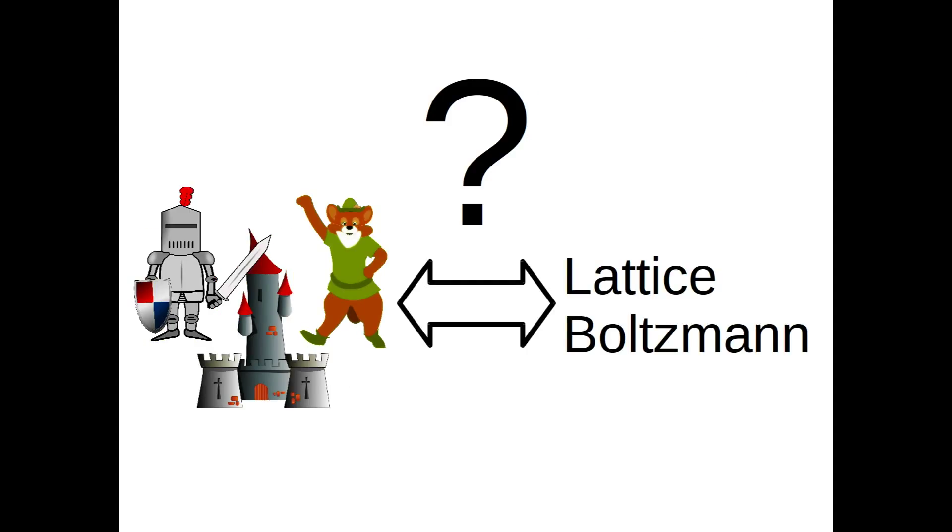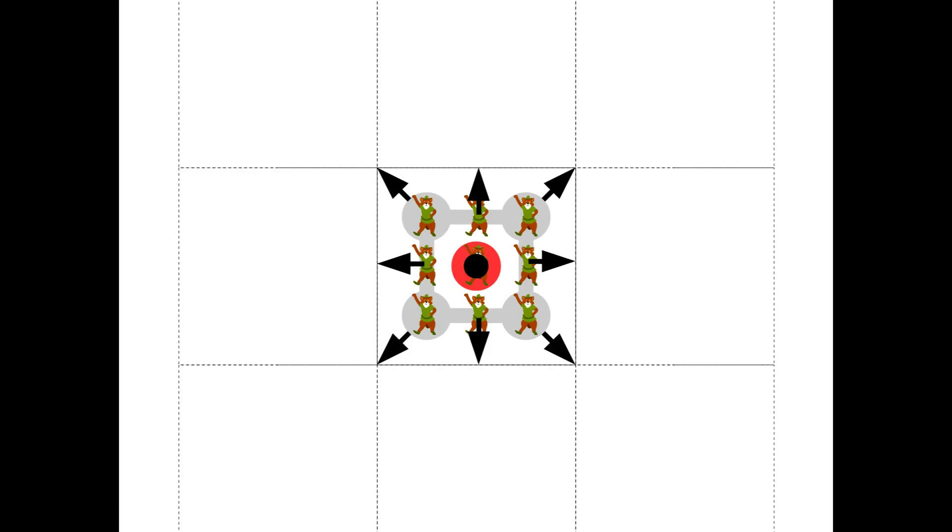So, what does the story of the foxes and attackers have to do with the Lattice-Boltzmann method, LBM? In the classical LBM, we first discretize space and turn our castle into a single Cartesian grid cell.